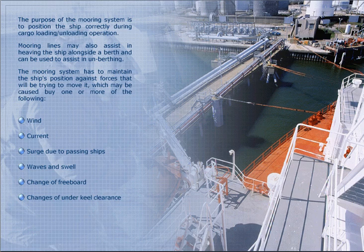The mooring system has to maintain the ship's position against forces that will be trying to move it, which may be caused by one or more of the following: current, surge due to passing ships, waves and swell, change of freeboard, and change of under-keel clearance.